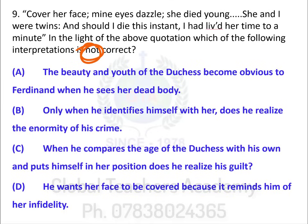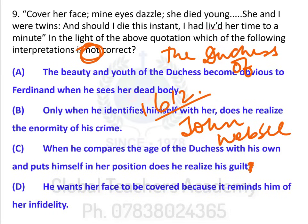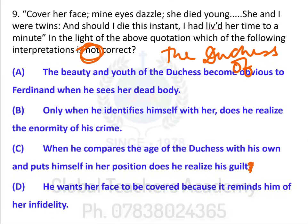Options: A — the beauty and youth of the Duchess become obvious to Ferdinand when he sees her dead body. B — only when he identifies himself with her does he realize the enormity of his crime. C — when he compares the age of the Duchess with his own and puts himself in her position, does he realize his guilt. D — he wants her face to be covered because it reminds him of her infidelity. The text is The Duchess of Malfi by John Webster, written in 1612, a tragic play known for one of the most brutal villains — Bosola.